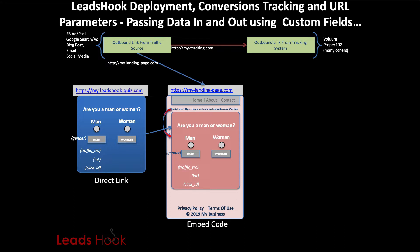If you're an affiliate marketer using a third-party traffic system and rotating traffic through it — such as VolumePro, Prosper202, CPV Labs, or similar platforms — then the URL you put in your ad will have the address of the tracking system. But most people will have a link going directly to the page where the decision tree is embedded.